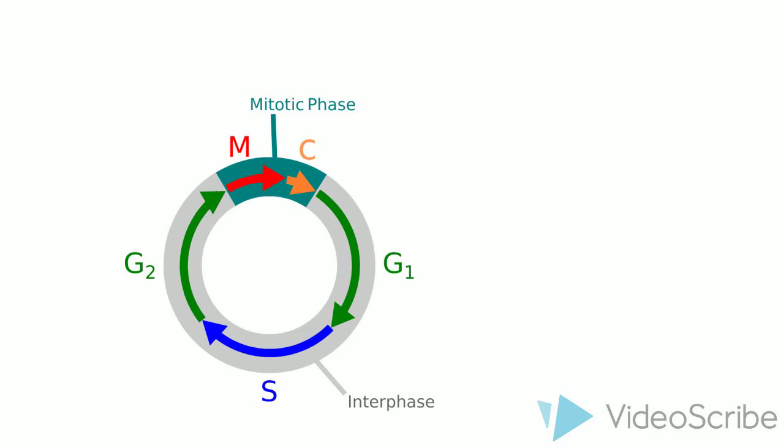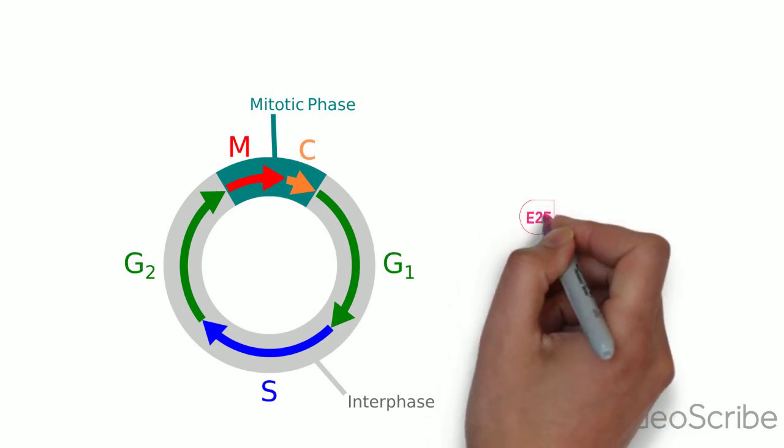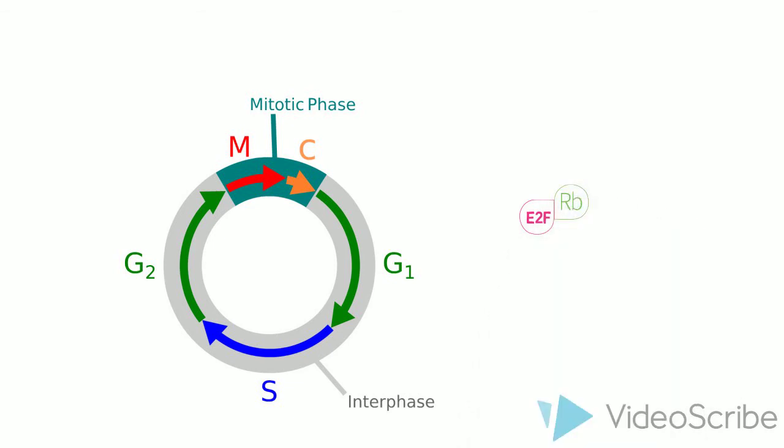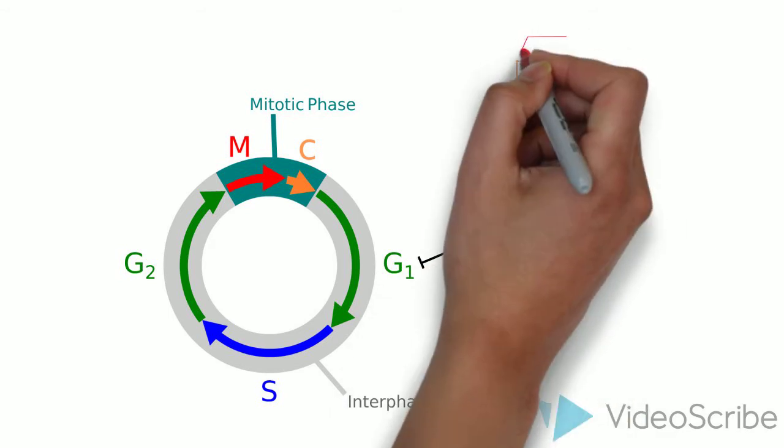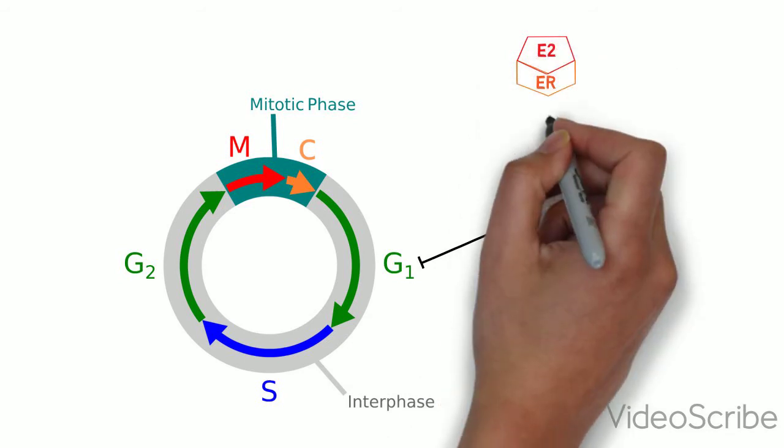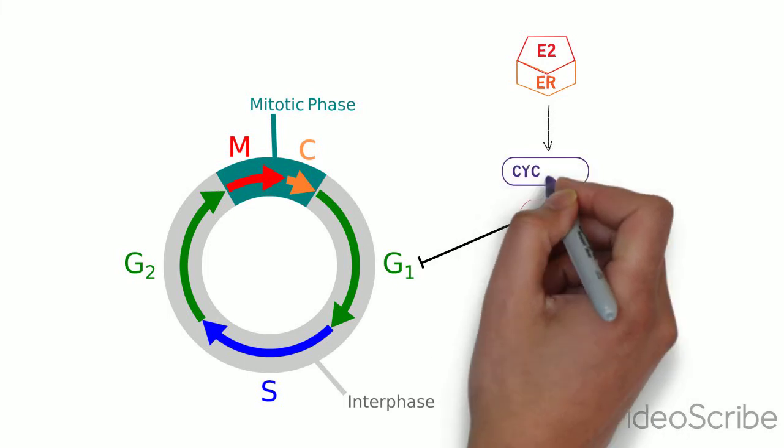In a healthy cell, cells are prevented from entering the cell cycle by a complex of E2F and the retinoblastoma protein. The E2F retinoblastoma complex is a tumour suppressor. Cell division is triggered, for instance, by oestrogen activating the oestrogen receptor causing stimulation of cyclin D.